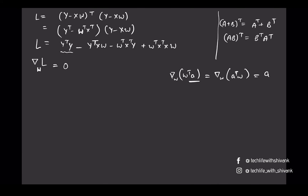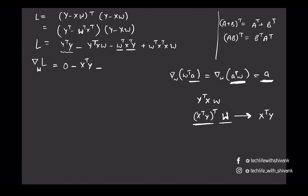We can see that yᵀy is a constant term so its derivative equals zero. For the term yᵀXW, we can write it as (Xᵀy)ᵀW, and then use the formula that the gradient of aᵀW with respect to W is a — so the gradient of (Xᵀy)ᵀW is Xᵀy. Similarly, for the term Wᵀ Xᵀy we use the formula that the derivative of Wᵀa with respect to W is a, giving the same result.